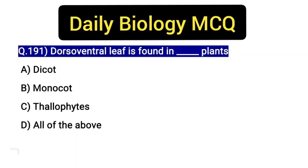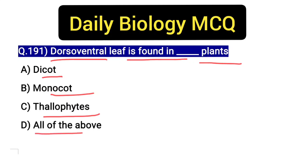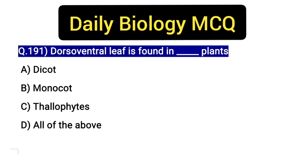Hello everyone, welcome to Arrive Online Classes. This is Praveen here. Today's MCQ for biology is: dorsal ventral leaf is found in which plants? Option A: dicot, Option B: monocot, Option C: thallophytes, or Option D: all of the above.